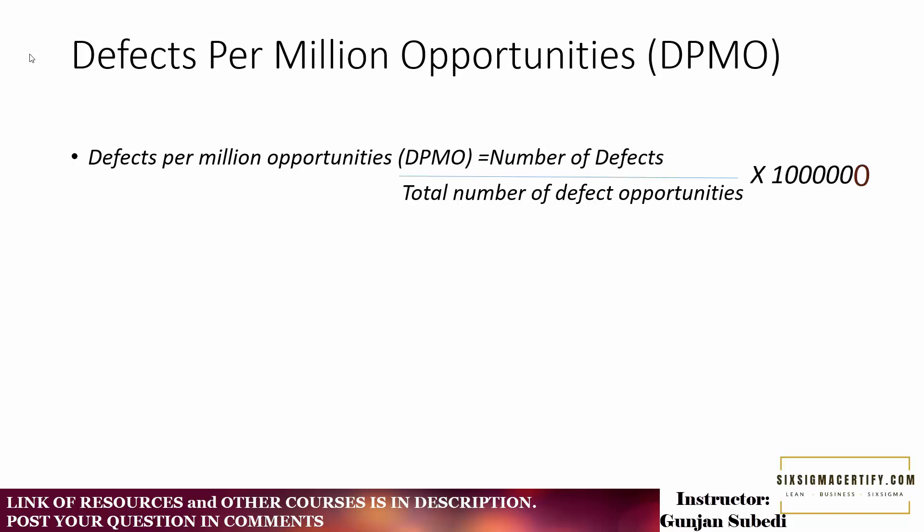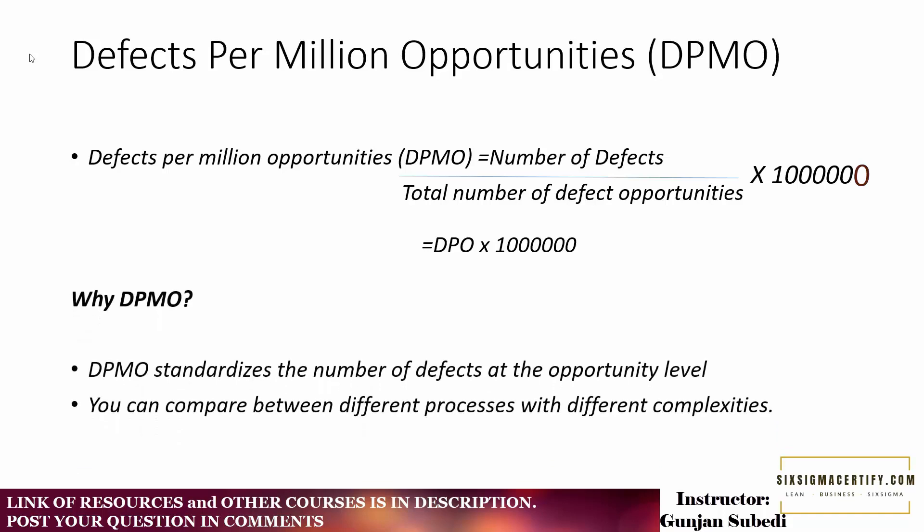Defects per million opportunities or DPMO means number of defects divided by total number of defects opportunities, which is expressed in terms of 1 million opportunities. We are trying to find out defects per 1 million opportunities, so it is called defects per million opportunities. We can simply say the formula as DPO times 1 million.